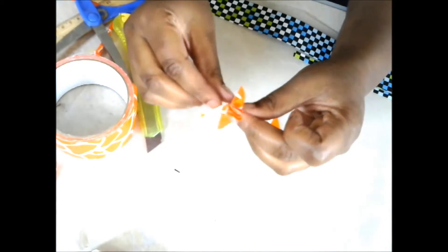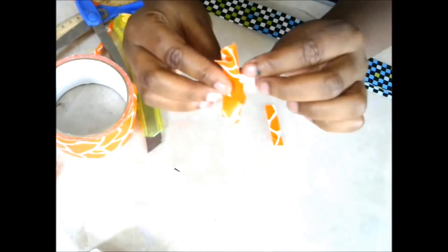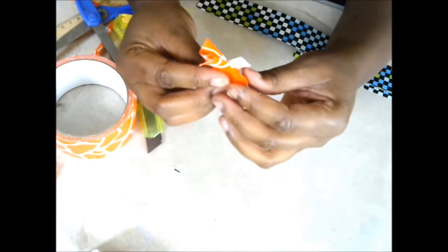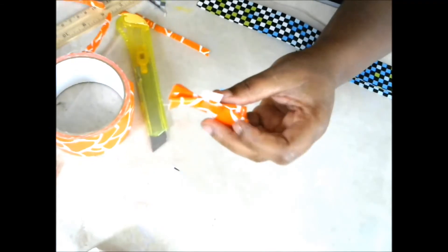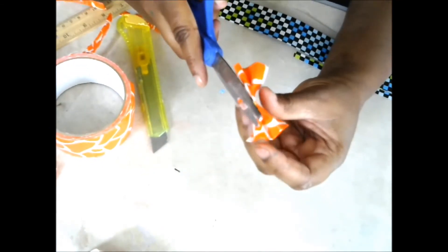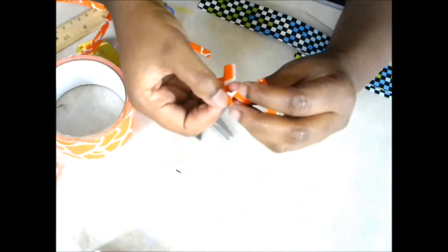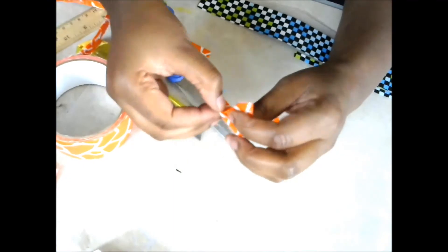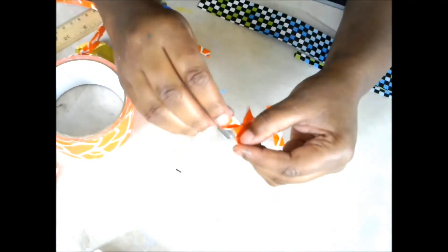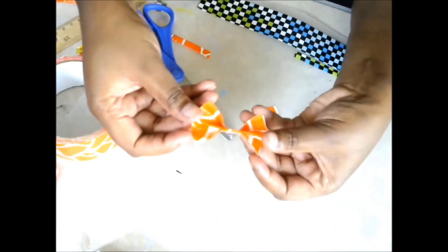You're going to take it and fold it down. And you're just going to cut off a little bit of one side. Just like that. So now you have a duct tape ribbon or bow.